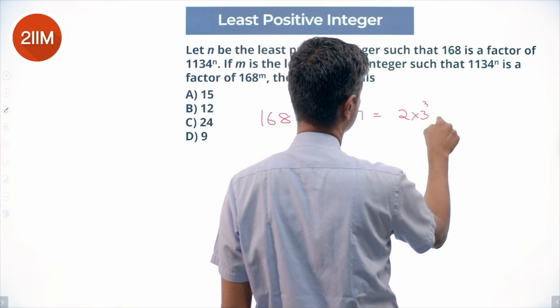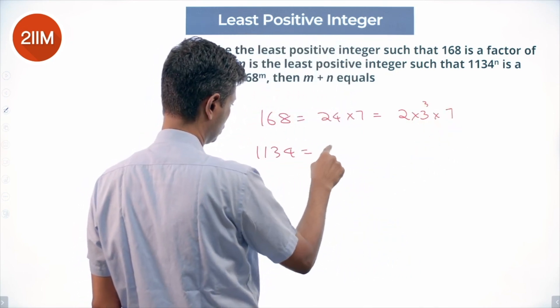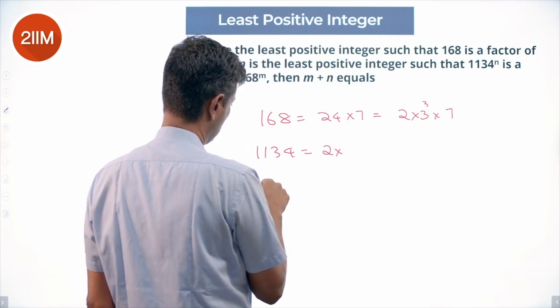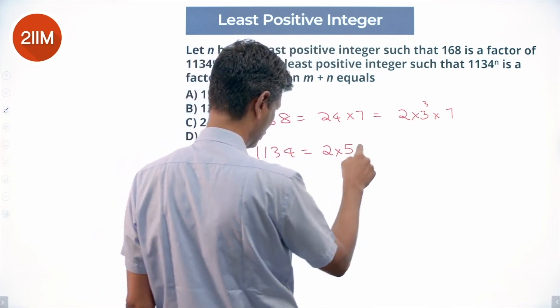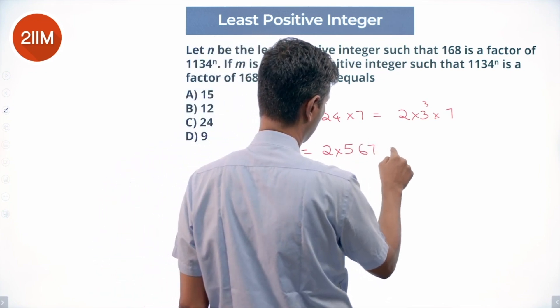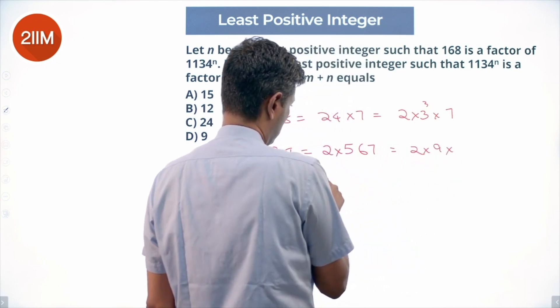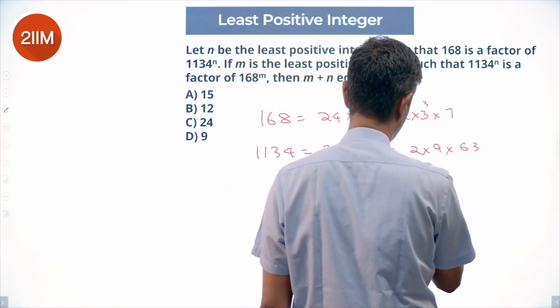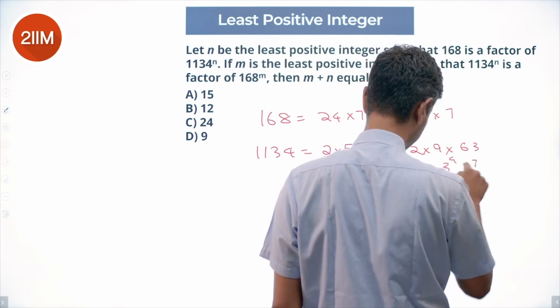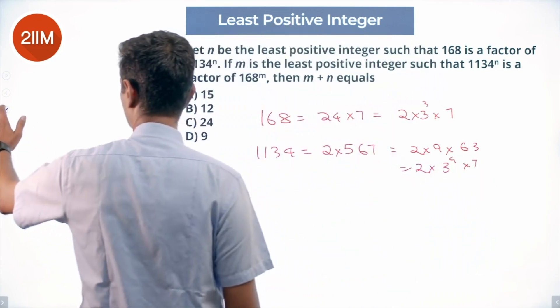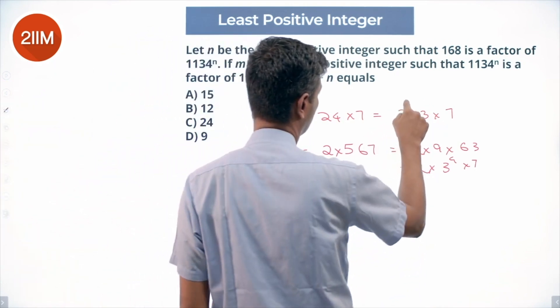Then 1134 is 2 into 567, which is a multiple of 9, 2 into 9 into 63, which is 2 into 9 into 9, 3^4 into 7, written as 2 into 3^3 into 7, which is incorrect. I am sure you guys have spotted it already. It is 2 into 3^4 into 7.